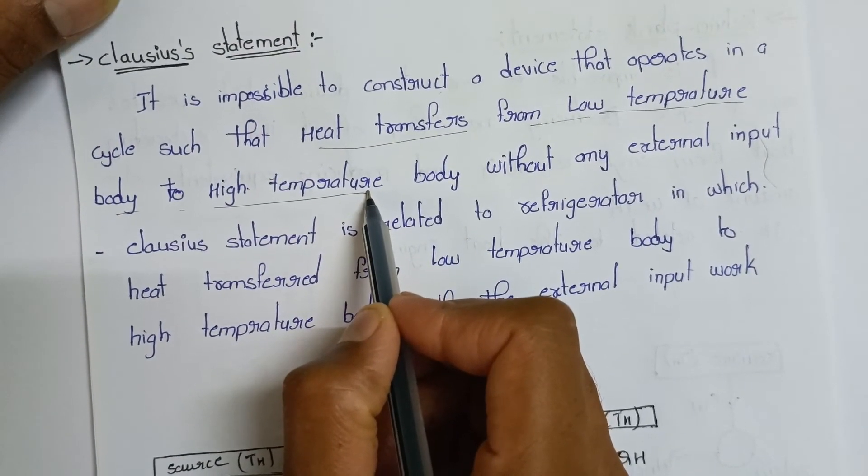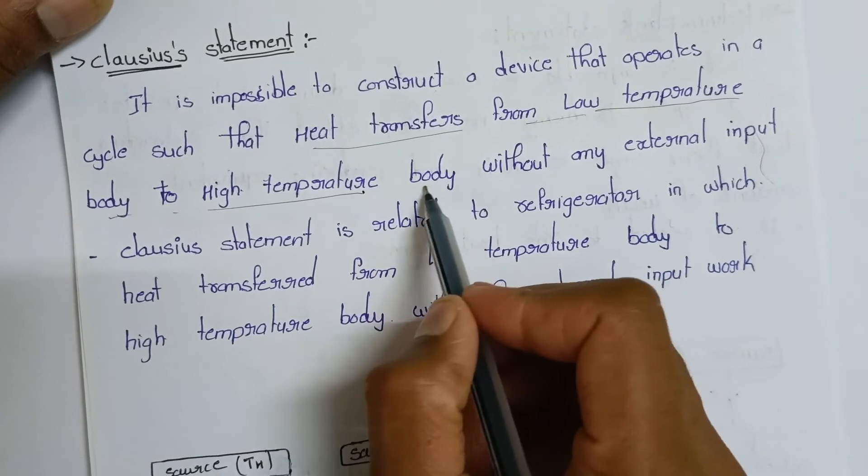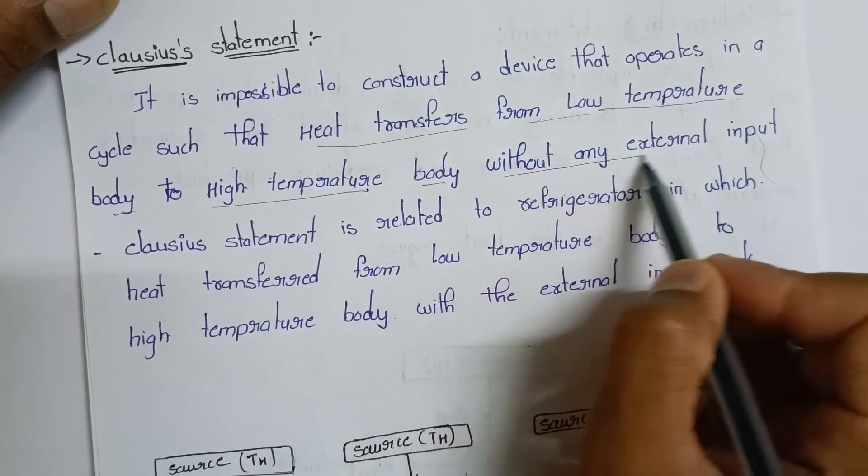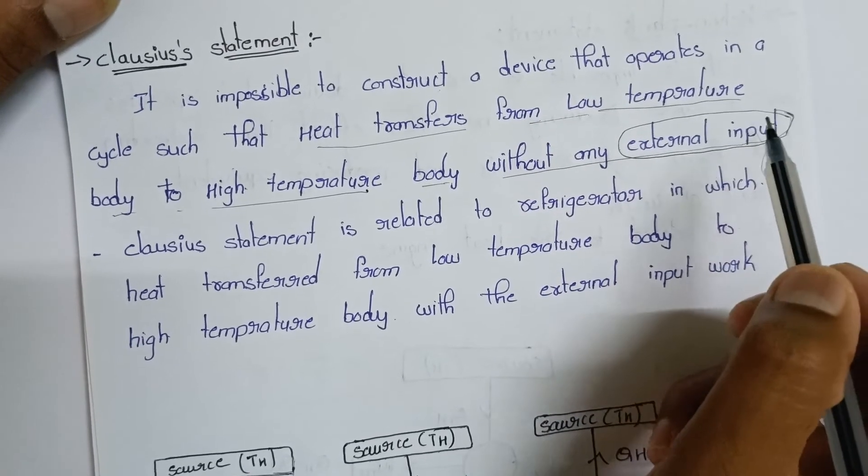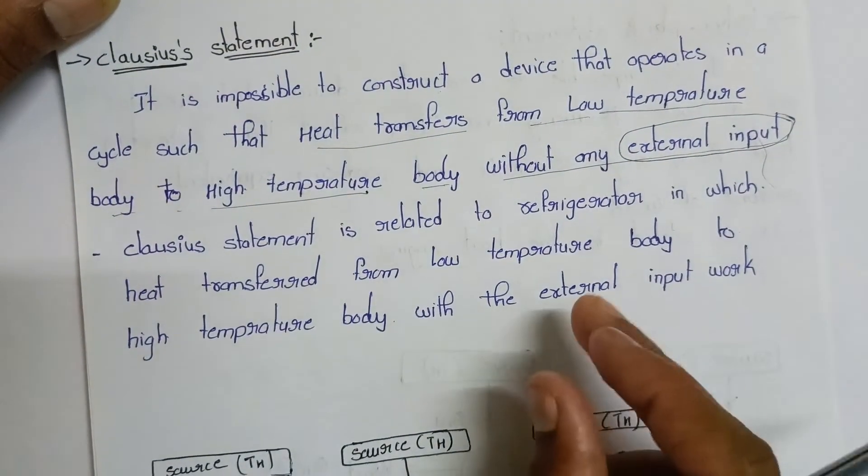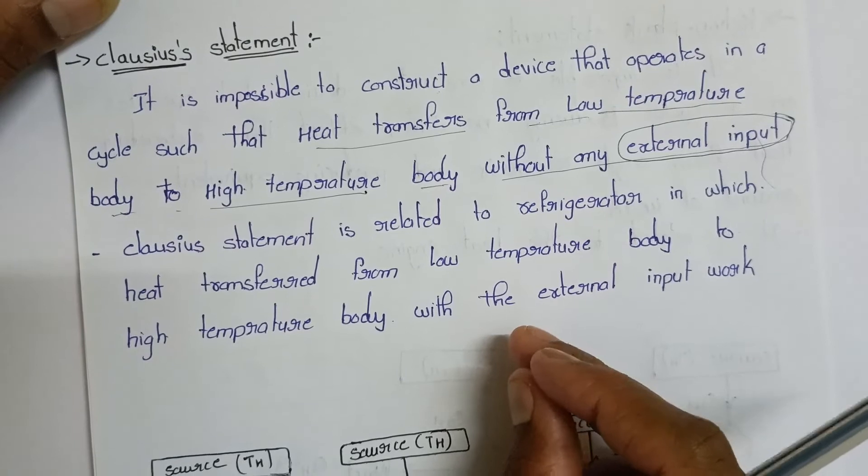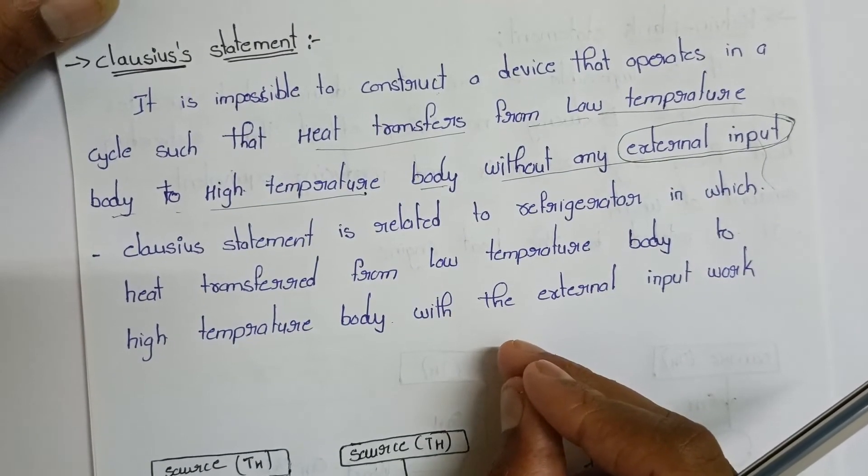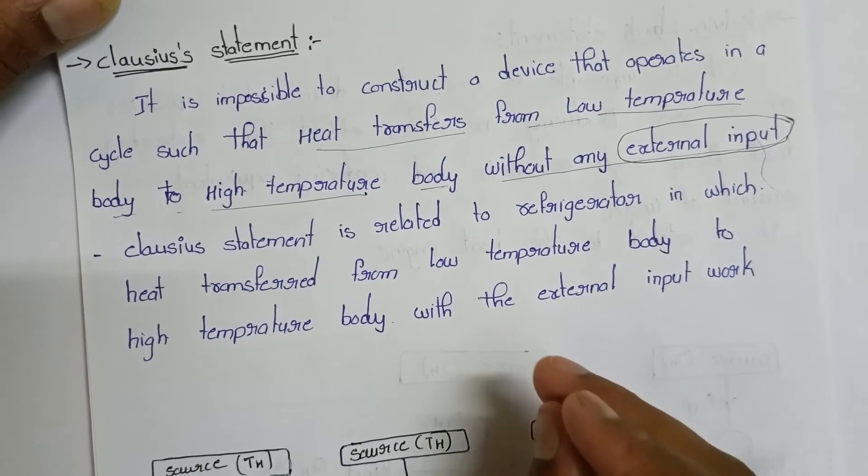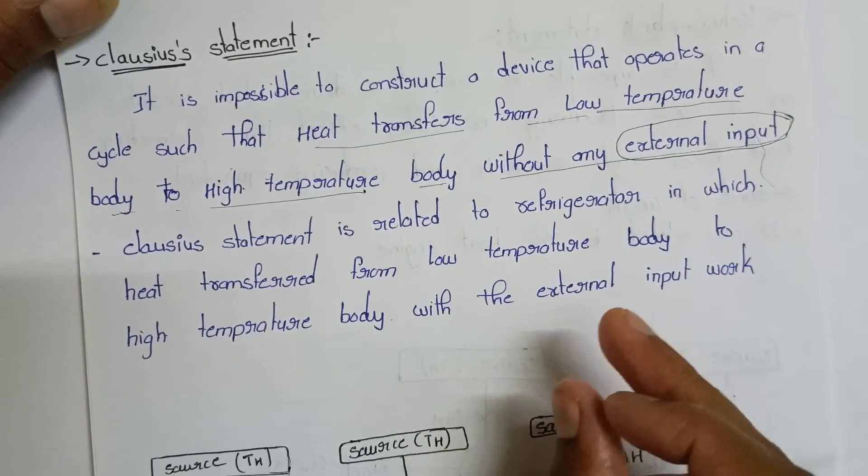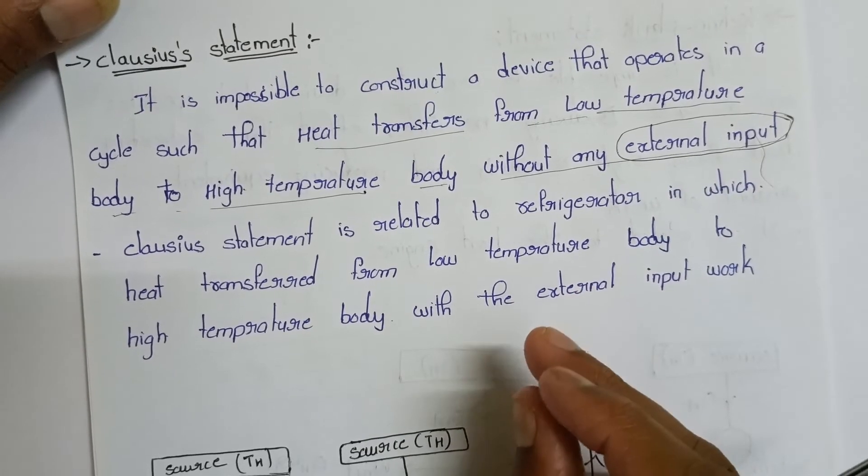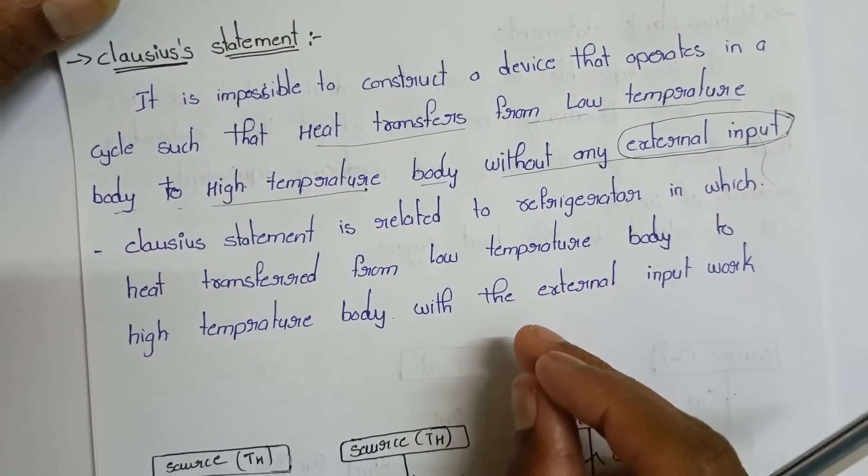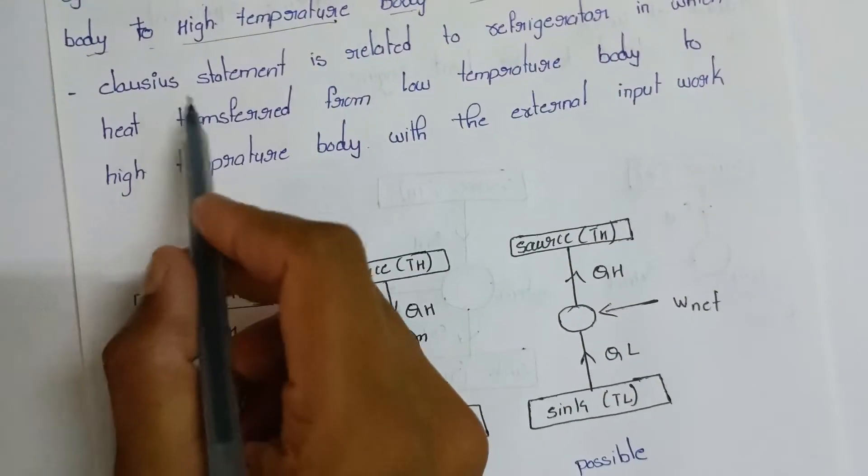Without any external input, heat cannot transfer from low temperature body to high temperature body. External work input is required. This is the key point of Clausius statement.